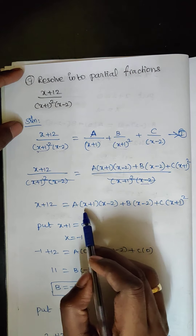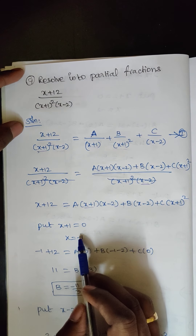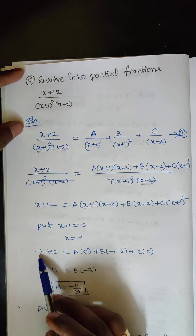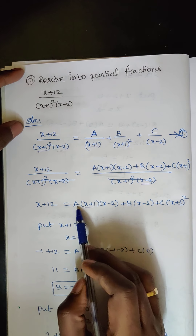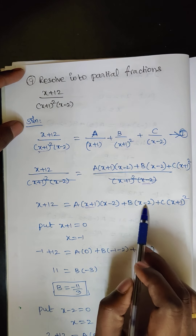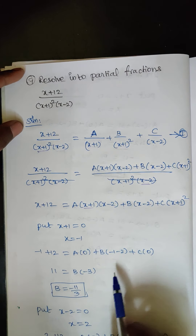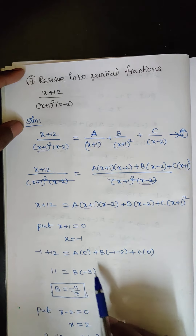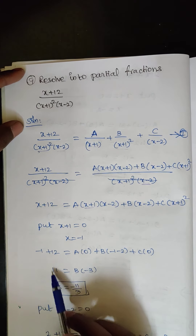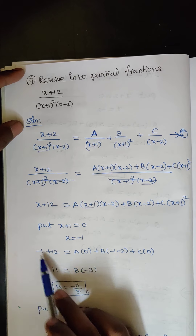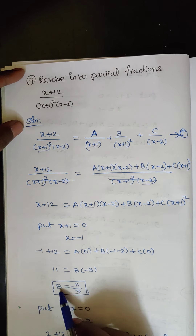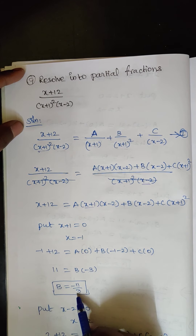Now put x + 1 = 0, so x = −1, and substitute here. So −1 + 12 equals A·0 plus B·(−1 − 2) plus C·0. That gives 11 = B·(−3), so B = −11/3.